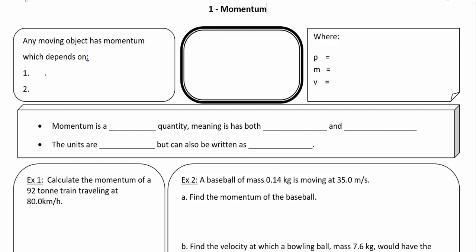In physics specifically, we say that any moving object has momentum, and that is going to depend on two factors: the mass of the object and its velocity.